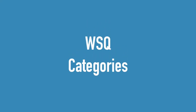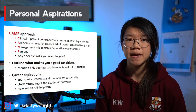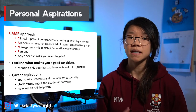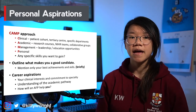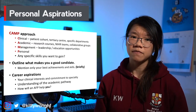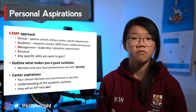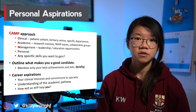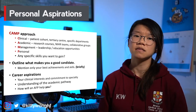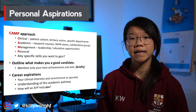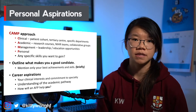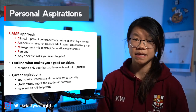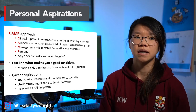Now let's break down the different categories of white space questions. The first is personal and career aspirations. A common question is why do you want to do this particular AFP? You can use the CAMP approach — Clinical, Academic, Management and Personal. For clinical factors, it might be a tertiary hospital receiving patients in your specialty of interest. Academically, talk about specific research opportunities or courses you can participate in, and particular departments or collaborative work you're interested in. For management, mention leadership or educational opportunities such as teaching medical students. Personal reasons are less important but can be an additional factor.